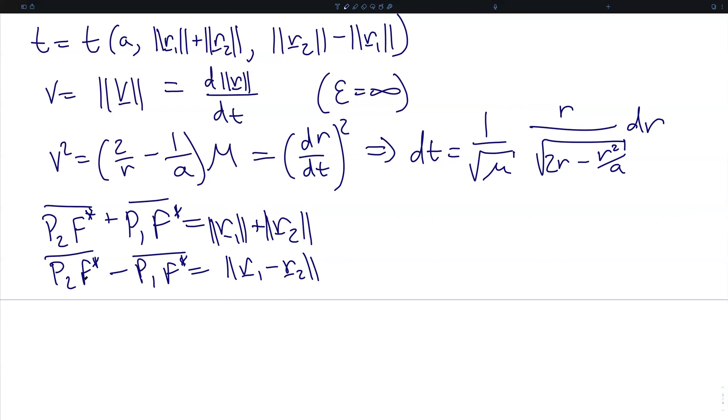The sum of the line segments between P1 and P2 and the vacant focus are the sum of the two radii, R1 and R2, and the difference between these two is the norm of the difference between the two radii. And that means that P1 F star is S minus R1 using our previously defined S value, and similarly P2 F star is equal to just S. And therefore these represent the limits of integration on the R side of our integral.